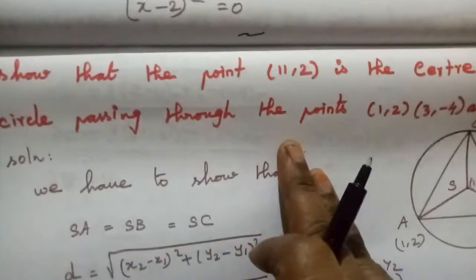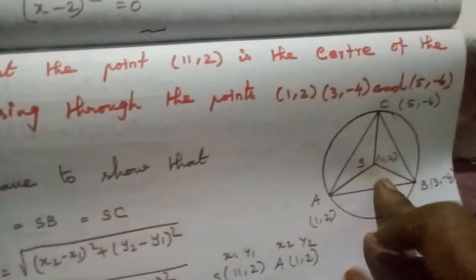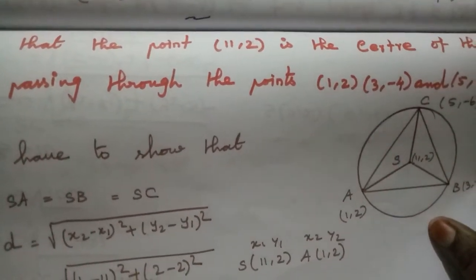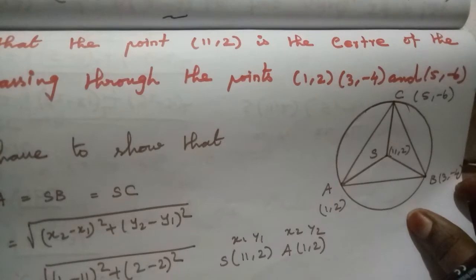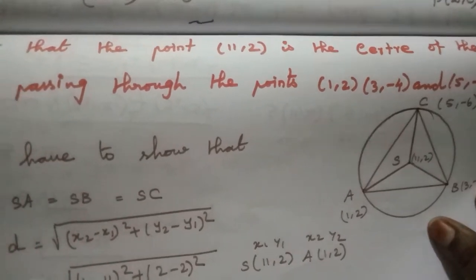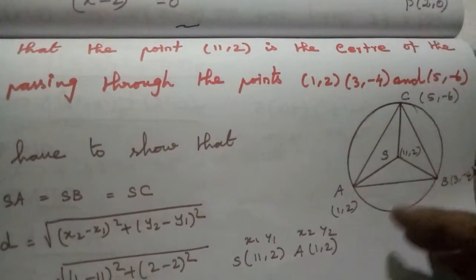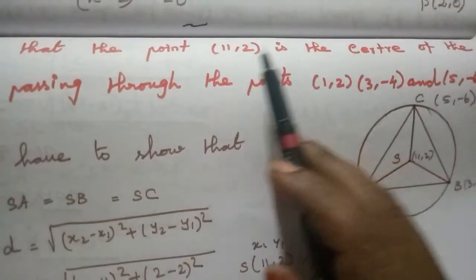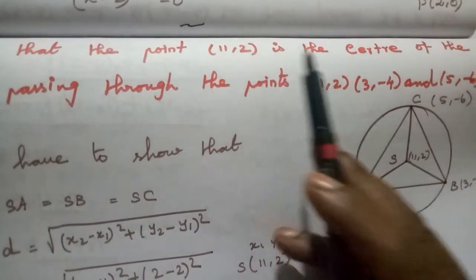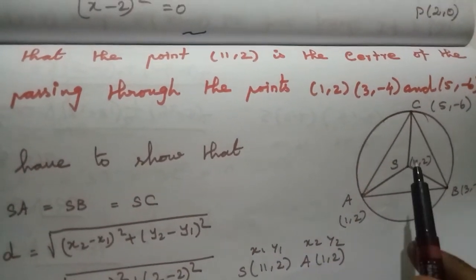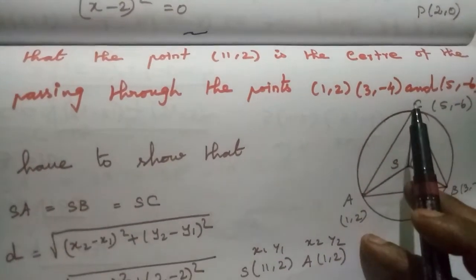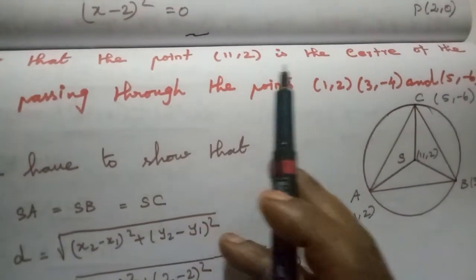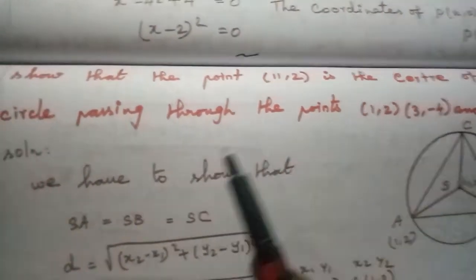Show that the point (11,2) is the center of the circle passing through the points (1,2), (3,-4), and (5,-6). We have three points given through the circle, and we need to show that (11,2) is the center.